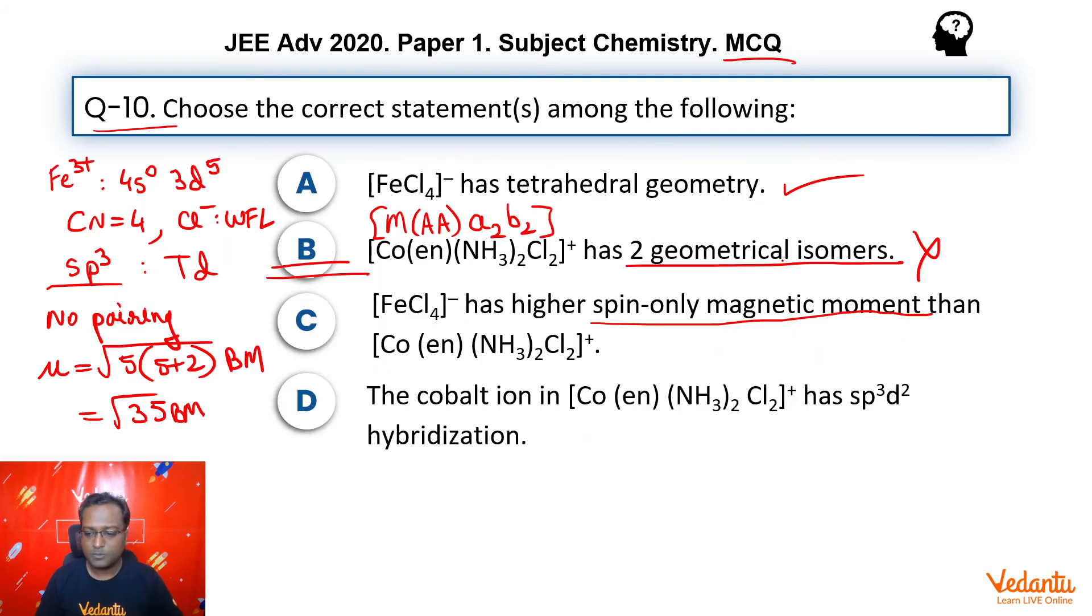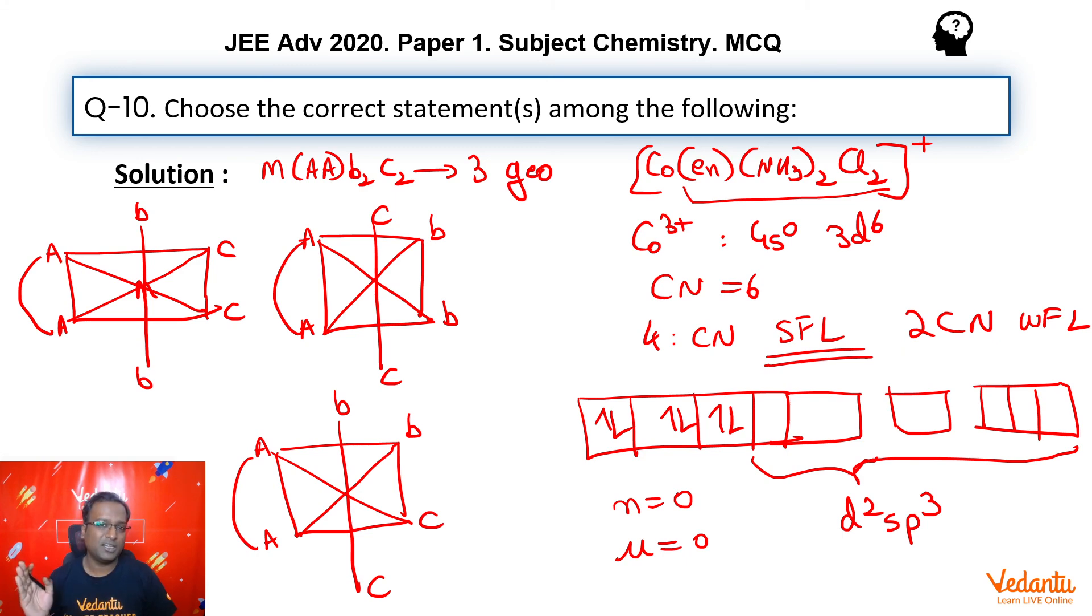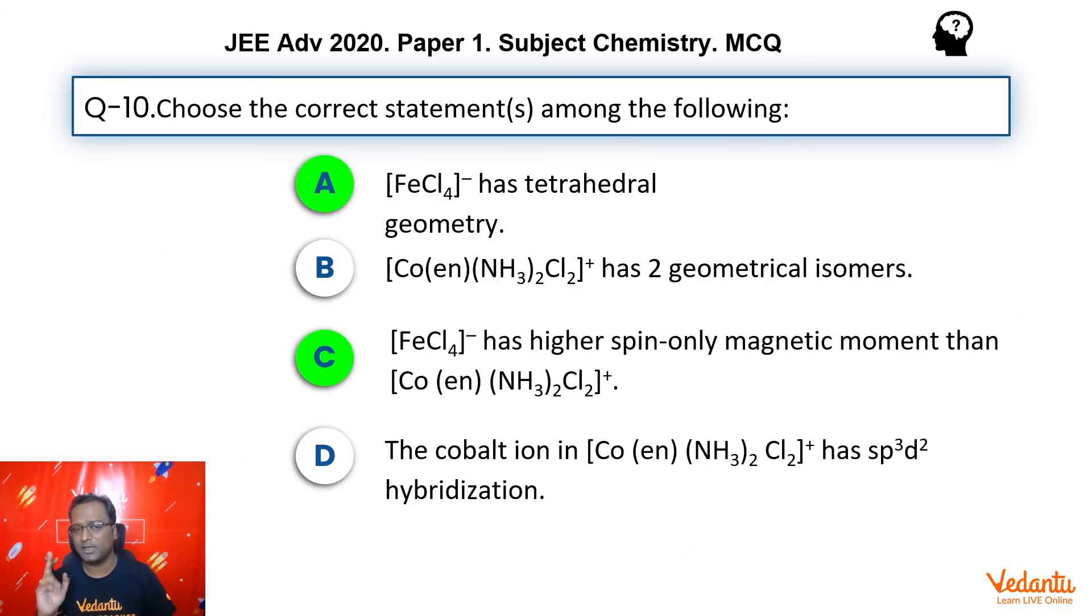Let us go back to our options. So, has a higher spin-only magnetic moment? Absolutely correct. And cobalt ion in this has SP3D2 hybridization? Incorrect. It came out to be as D2SP3. Simple question from coordination compounds. Not difficult, but you have to be careful for the trap here that you had 4 coordination numbers as SFL and 2 as WFL. So, you have to decide what is to be done. Hence, answer here is A and C.